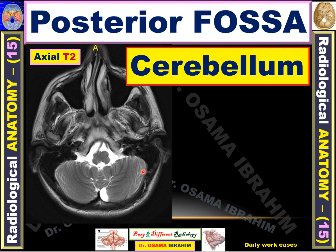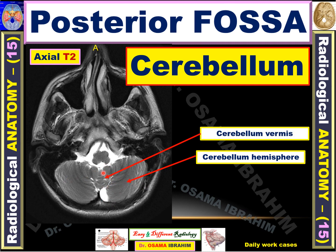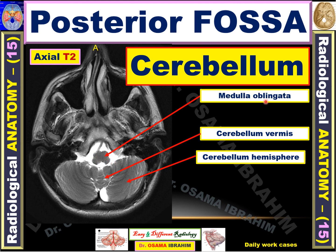What are the contents of this posterior fossa? On this axial T2-weighted MRI image — where CSF appears bright and subcutaneous fat appears bright — the cerebellum appears on both sides as two cerebellar hemispheres. The left cerebellar hemisphere is visible, connected to the right by the cerebellar vermis. The anterior structure is the brainstem, and this part is the medulla oblongata, which is the most inferior part of the brainstem.